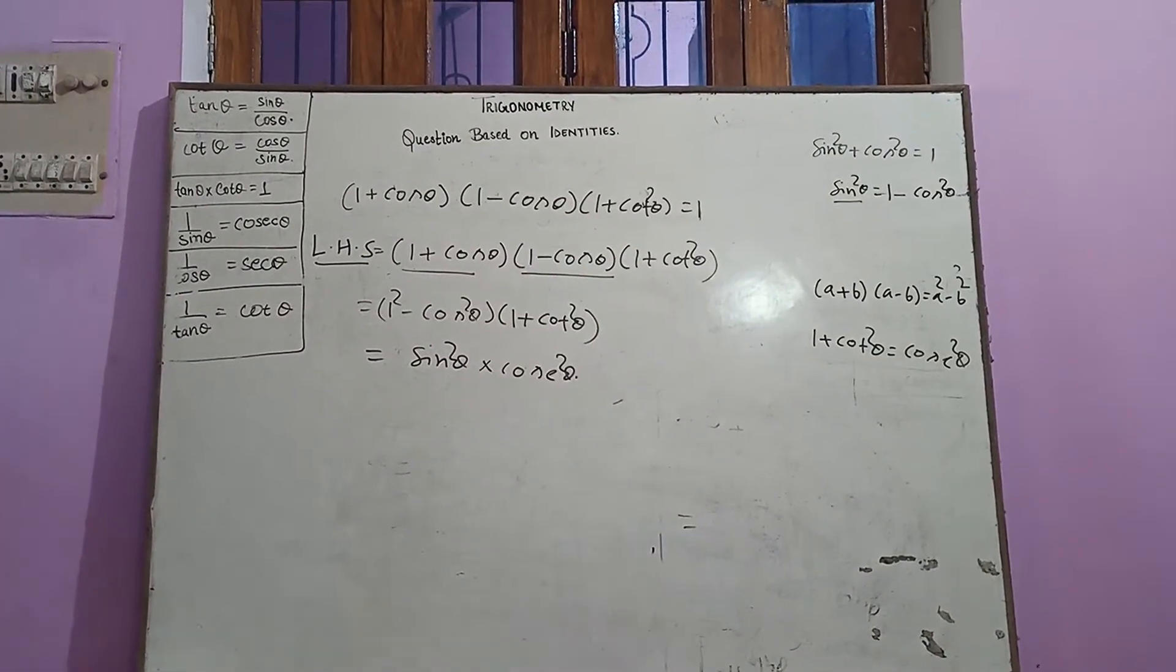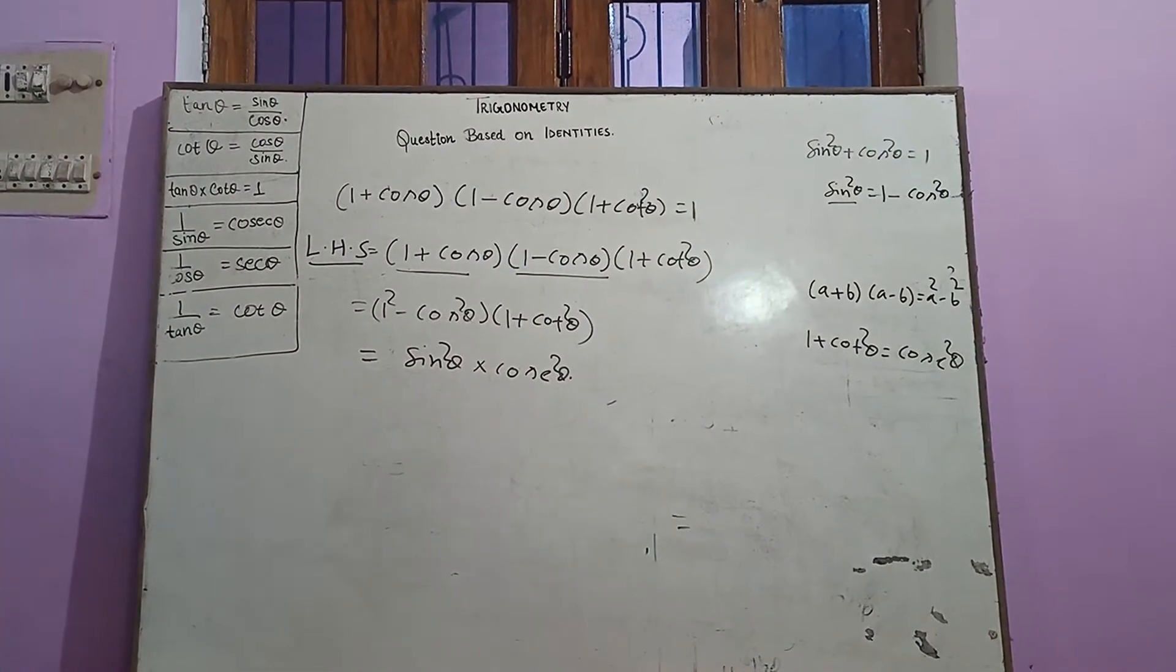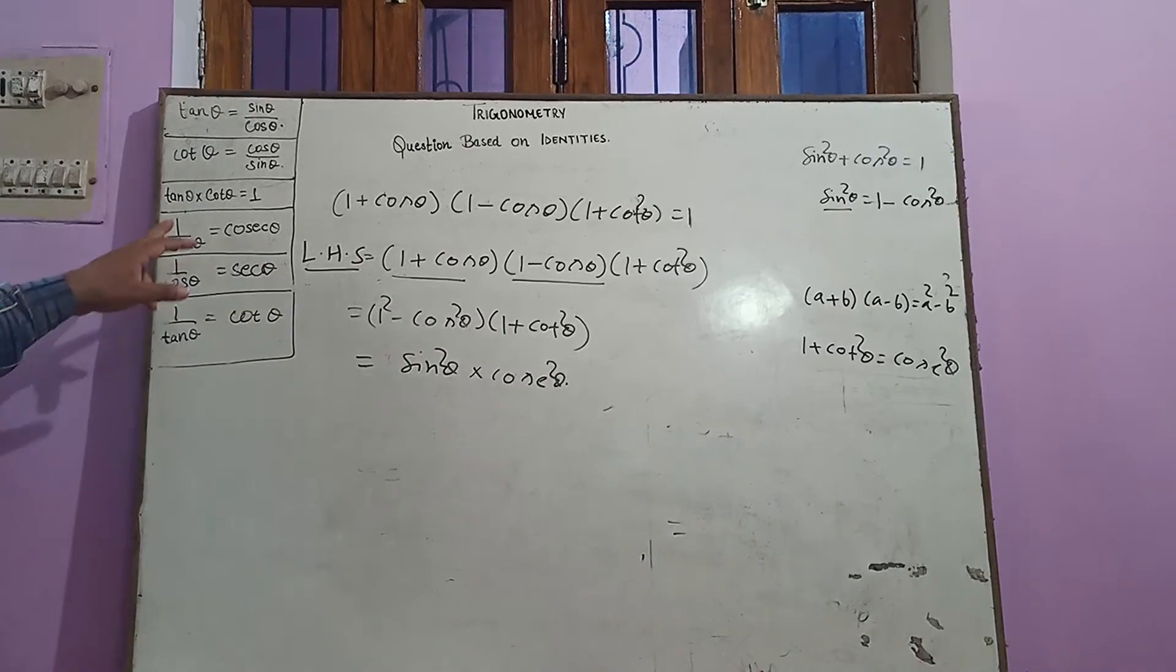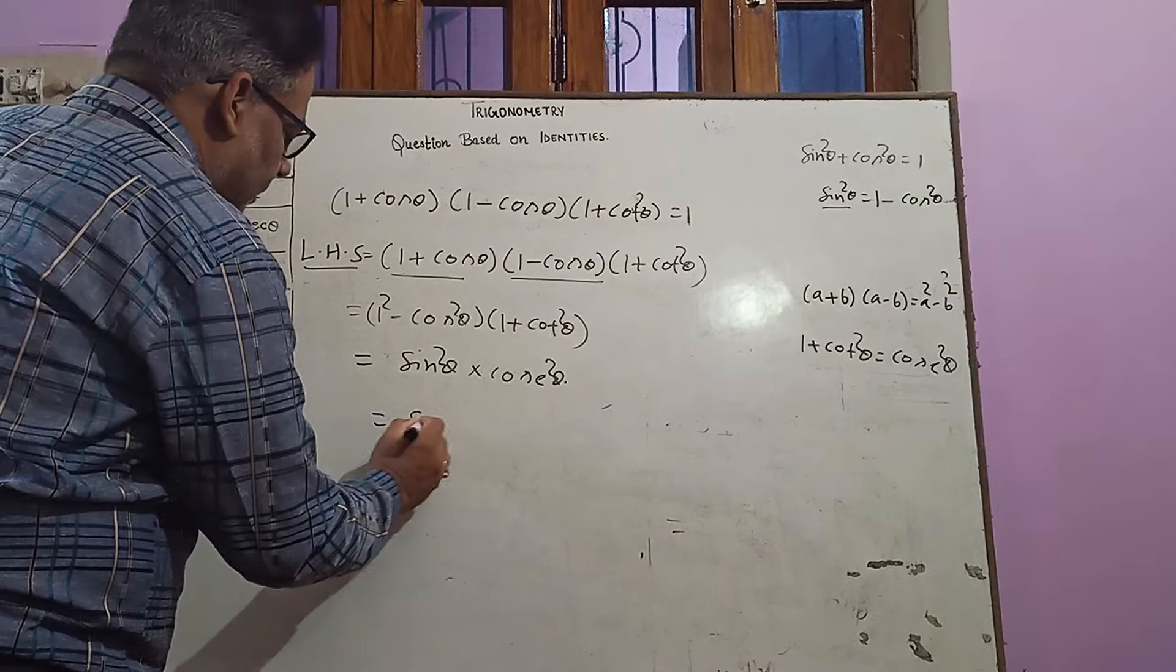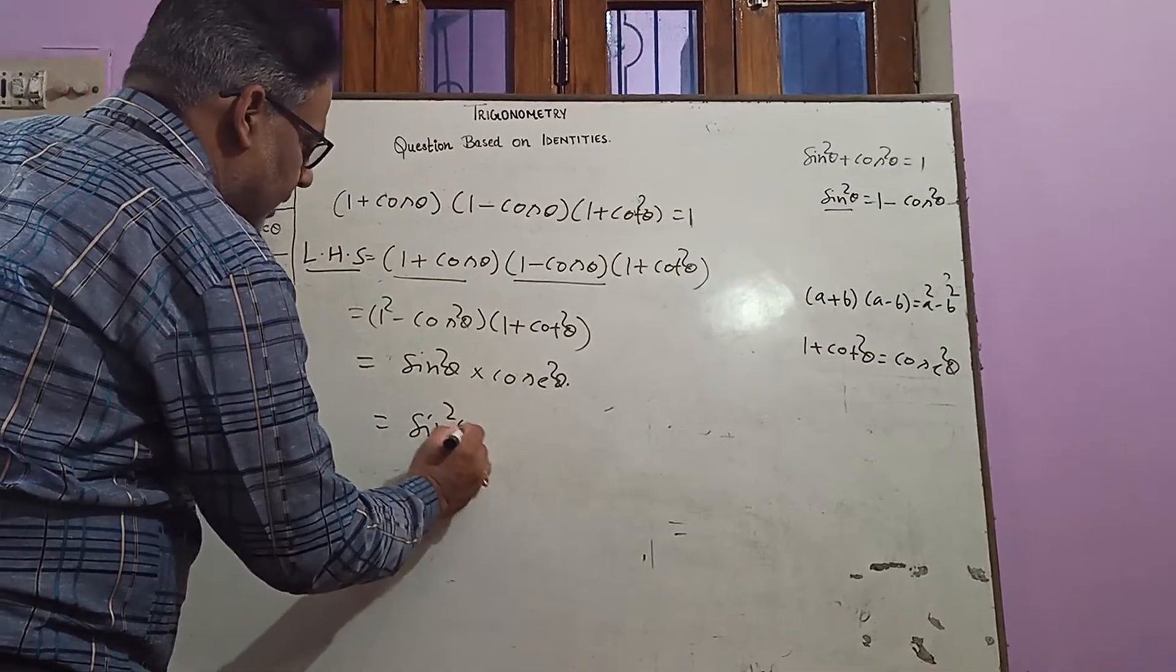And cosec θ is the reciprocal of sin θ, so 1 upon sin θ you can write as cosec θ. So now in the next step you can write it as sin²θ